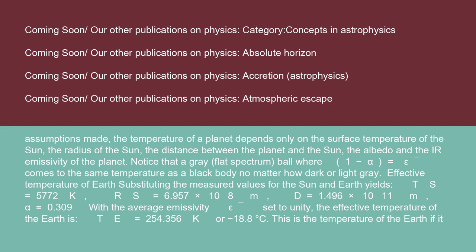Effective temperature of Earth: substituting the measured values for the Sun and Earth — T_S = 5,772 K, R_S = 6.957 × 10⁸ m, D = 1.496 × 10¹¹ m, α = 0.309 — with average emissivity ε set to unity, the effective temperature of the Earth is T = 254.356 K, or −18.8°C.